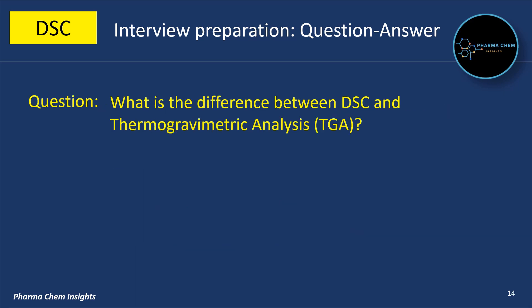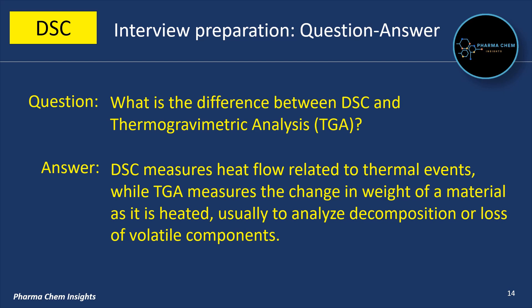Next question: What is the difference between DSC and thermogravimetric analysis (TGA)? DSC measures heat flow related to thermal events, while TGA measures the change in weight of a material as it is heated, usually to analyze decomposition or loss of volatile components.